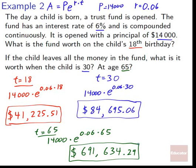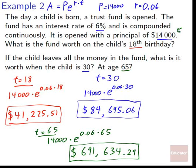If the child uses the money as a retirement fund and waits until age 65, then: 14,000 × e^(0.06×65) = $691,634.29. Starting at $14,000 and leaving it alone for 65 years yields nearly $700,000. This highlights the power of compound interest and the importance of investing for retirement at an early age. If that 6% were bumped up to 8% or 10%, we'd see massive increases. You can get a lot of growth just by nudging the interest rate up another point or two.